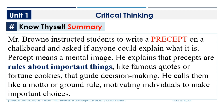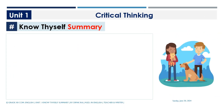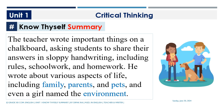Mr. Brown instructed students to write a precept on the chalkboard and asked if anyone could explain what it is. He explains that precepts are rules about important things — like famous quotes or fortune cookies — that guide decision-making. He calls them a motto or ground rule, motivating individuals to make important choices. The teacher wrote 'important things' on the chalkboard, asking students to share their answers, including rules, schoolwork, and homework.